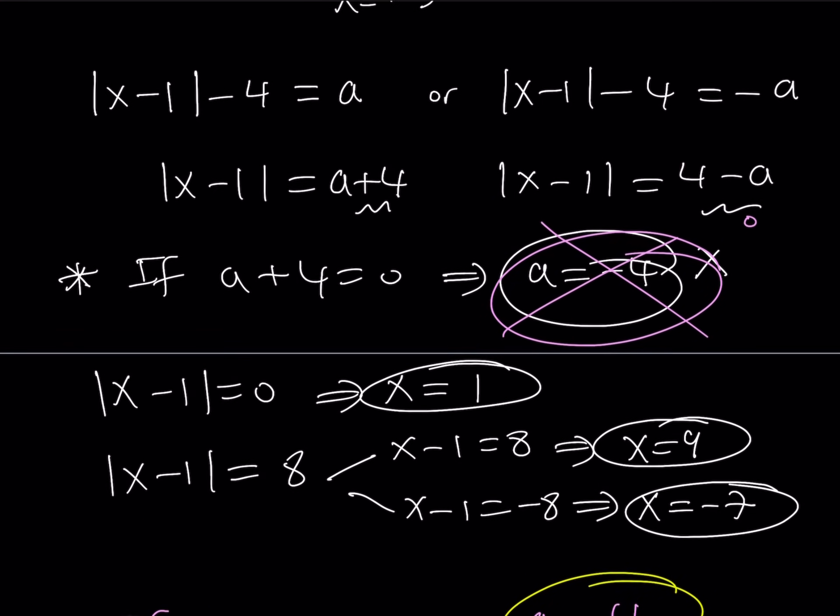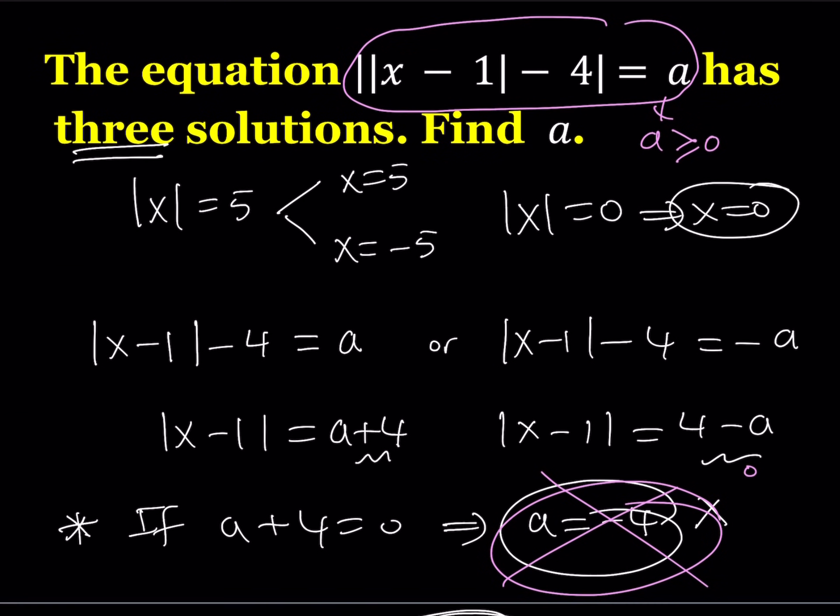So a equals negative 4 did not work because if you substitute that into the original equation, we get something that doesn't make sense for absolute value. Of course, we're talking about the absolute value of real numbers. Even if you find the absolute value of a complex number, it's still going to be non-negative. So is there something whose absolute value is negative? Something to think about. Anyways, the value of a from here equals 4. Apparently, there's only one possible value for a, for which we have three solutions.